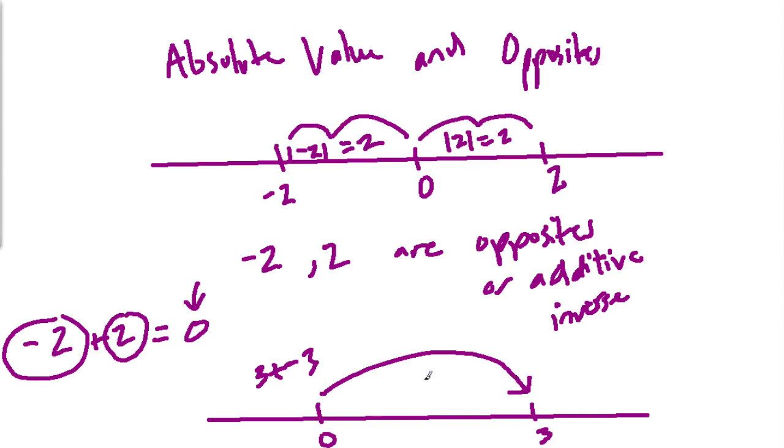So, what does that mean? Well, I just moved to the right three times. Now, I'm moving back to the left three times. And where does that bring me? To 0. So, in other words, opposites, when you add them up, they'll always bring you to 0, which is why they're called the additive inverse. And inverse gives you that balance at 0. So, add two opposites and you get 0.